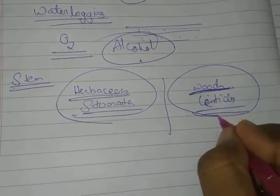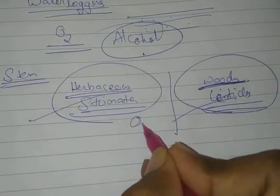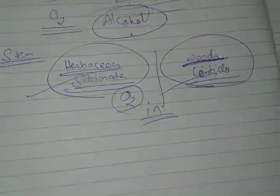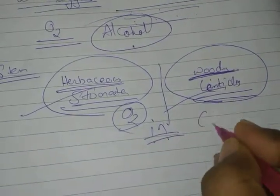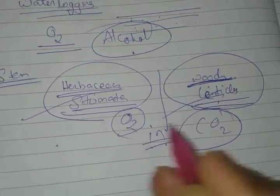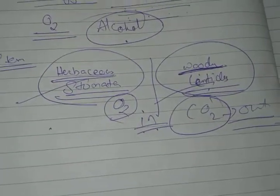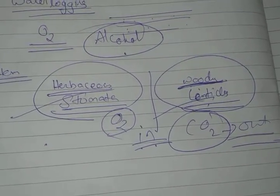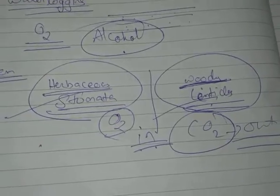So through stomata or through lenticels - whether the stem is woody or herbaceous - through both of these, oxygen will diffuse in, respiration will occur, and whatever carbon dioxide is produced, all of it will diffuse out through the lenticels or stomata. It's a simple diffusion process - by diffusion it comes in, by diffusion it goes out.